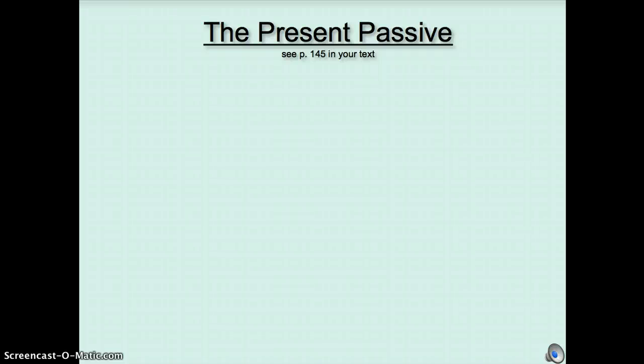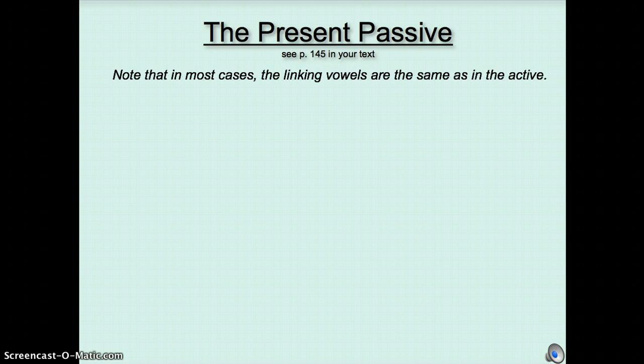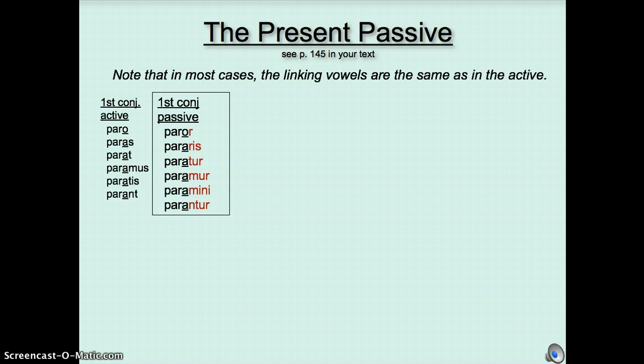Let's start with the present tense. This is on page 145 in your text. In fact, all these tenses are on page 145 in your text. You should see it at some point, just to make sure you're studying. Note that in most cases, the linking vowels are the same as in the active. In the first conjugation, our linking vowel is mostly as, except for the first person singular. So where we had paro, paras, parat, paramus, paratis, parant, we're going to take off those active endings and put on the passive ones. And so we're going to get paror, pararis, paratur, paramur, paramini, parantur.